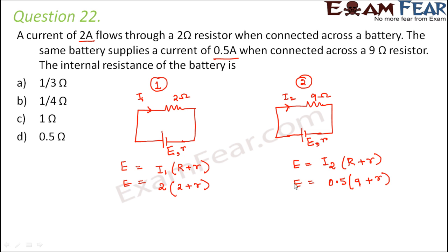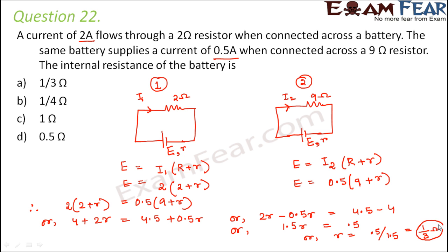Now looking at these two equations, you see the left hand side is same. Left hand side is E in both the cases. Therefore, we can say 2 into 2 plus r is equal to 0.5 into 9 plus r, or 4 plus 2r is equal to 4.5 plus 0.5r, or we can say 2r minus 0.5r is equal to 4.5 minus 4, or this can be written as 1.5r is equal to 0.5, or r is equal to 0.5 divided by 1.5 which is equal to 1 by 3 ohms. Therefore, the value of the internal resistance of the cell is 1 by 3 ohms.